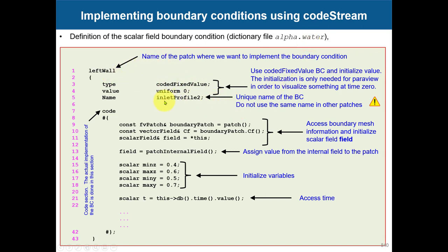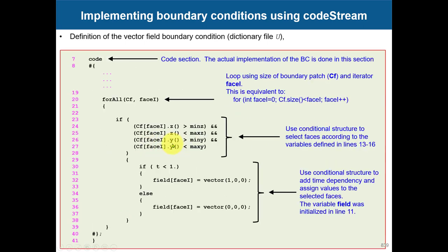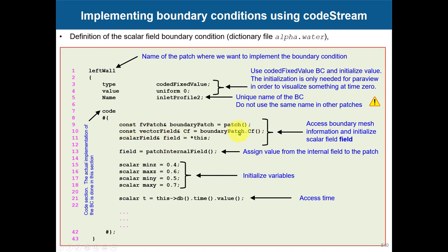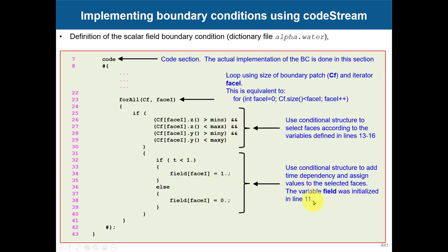We're not only injecting velocity — we also inject the water phase. So we need to program alpha.water for the same patch, accessing the same information. Names must be different: here it's `inletProfile1`, and here `inletProfile2` or whatever, but they must be unique. Since alpha.water is a scalar, the value is `uniform 0` — a scalar value — whereas velocity was a vector. CF is the face center coordinate vector (XYZ), and the scalar field is alpha.water.